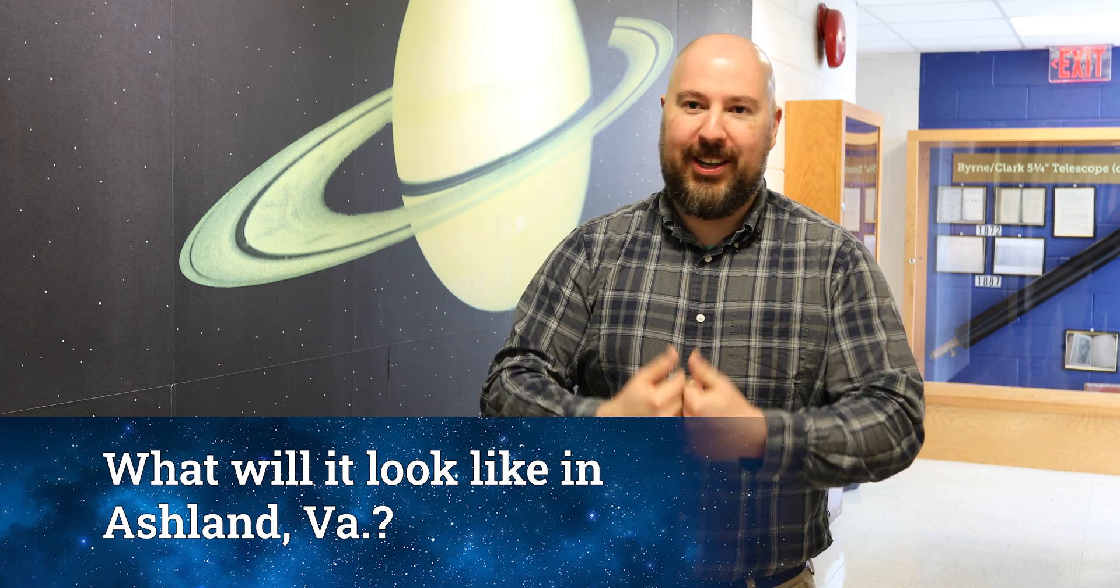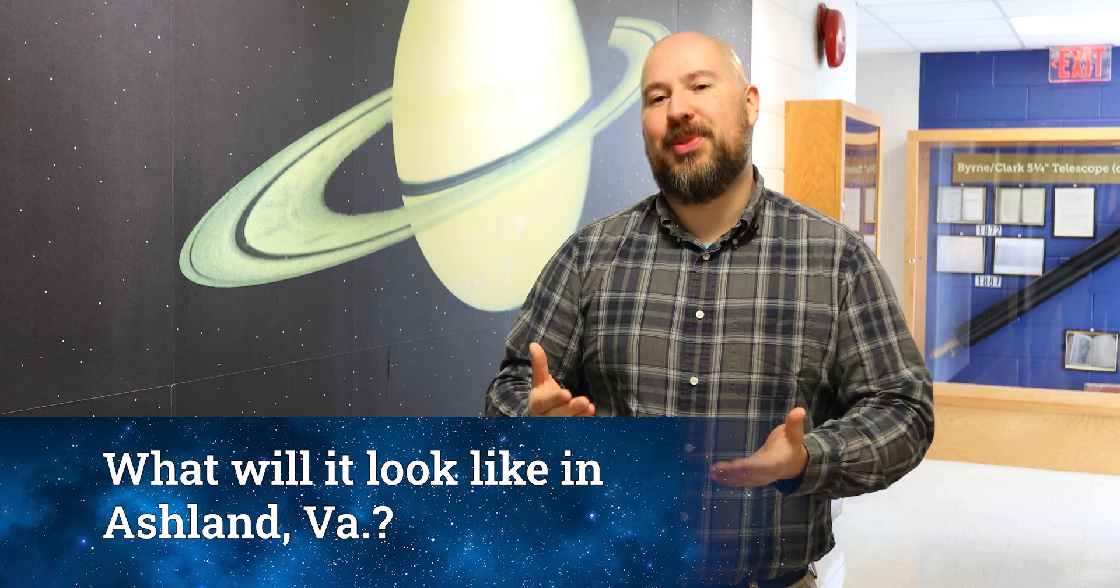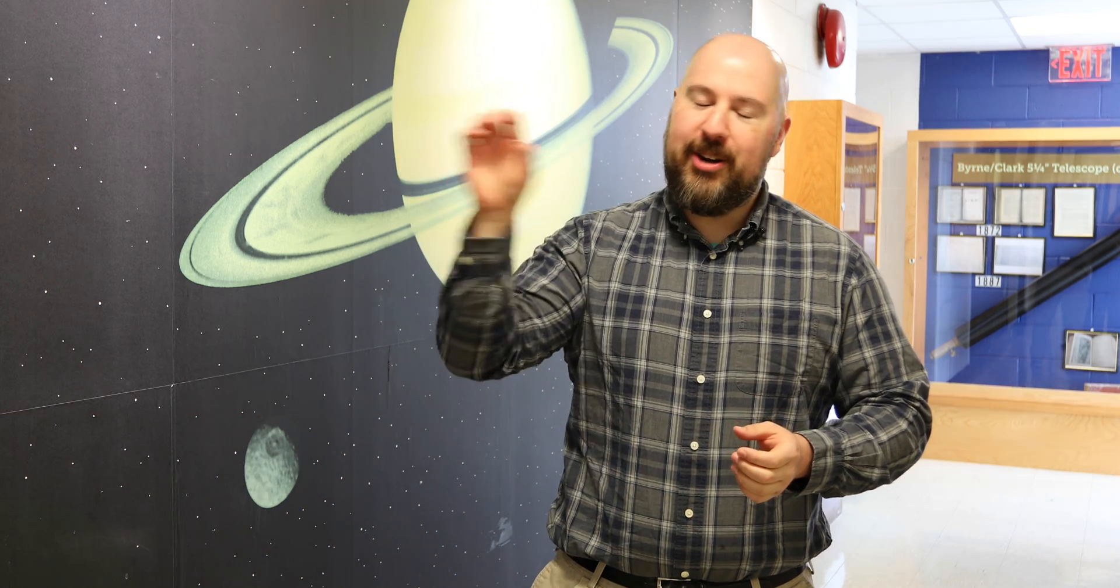So we are not going to get a total solar eclipse; we instead get a partial solar eclipse. There's a very narrow range across the United States in the 2024 eclipse where the moon will perfectly block out the sun. We get about 80% coverage, which is still pretty good, but the sun is still bright enough that you cannot look at it directly without proper eyewear.